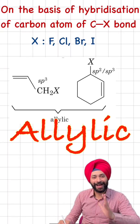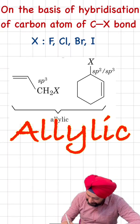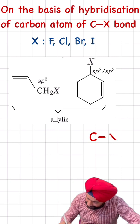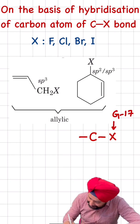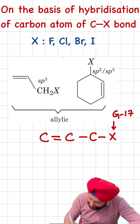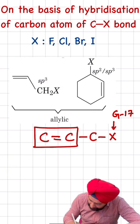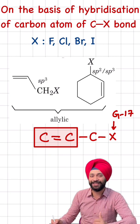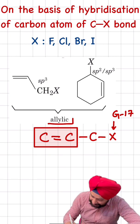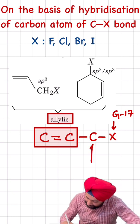Are you confused with the term allylic? I will make you better understand this concept. If carbon attached to the halogen, which are group 17 elements, is directly attached with the carbon-carbon double bond, then this particular shape or structure is referred to have a special name in organic chemistry, which is allylic.